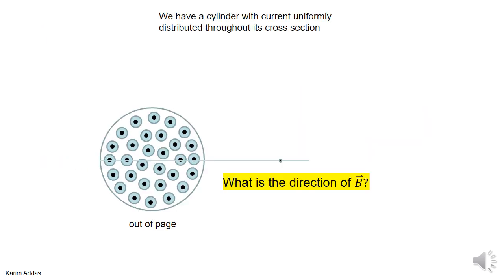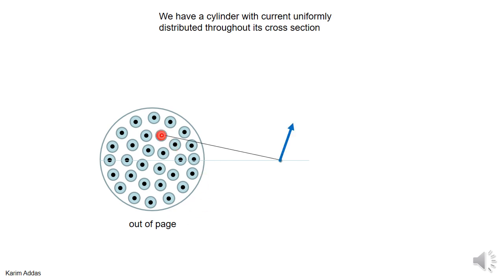To start using Ampere's law we need to know the direction of the magnetic field. If you look at the wire from a head-on point of view, the current is coming out of the page. Imagine the wire consists of many small, very thin wires packed next to each other — of course it's continuous, but this is just for illustration. What would the direction of the magnetic field be at a point due to this wire with uniform current?